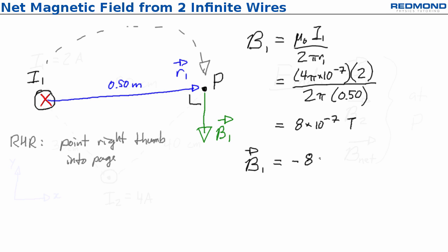Therefore, B1 is equal to negative 8 times 10 to the negative 7 j hat tesla. I'm using unit vectors because I'm lazy, and it's the quickest way to specify the vector's direction.